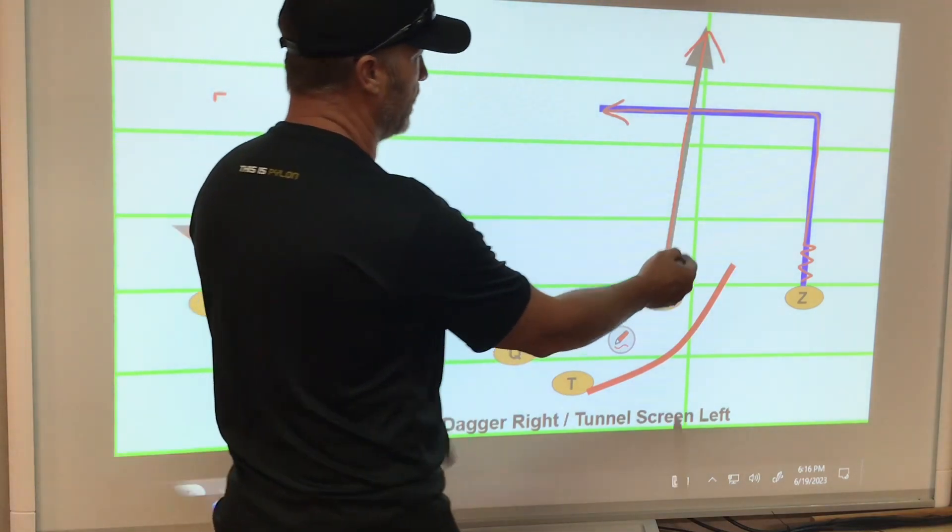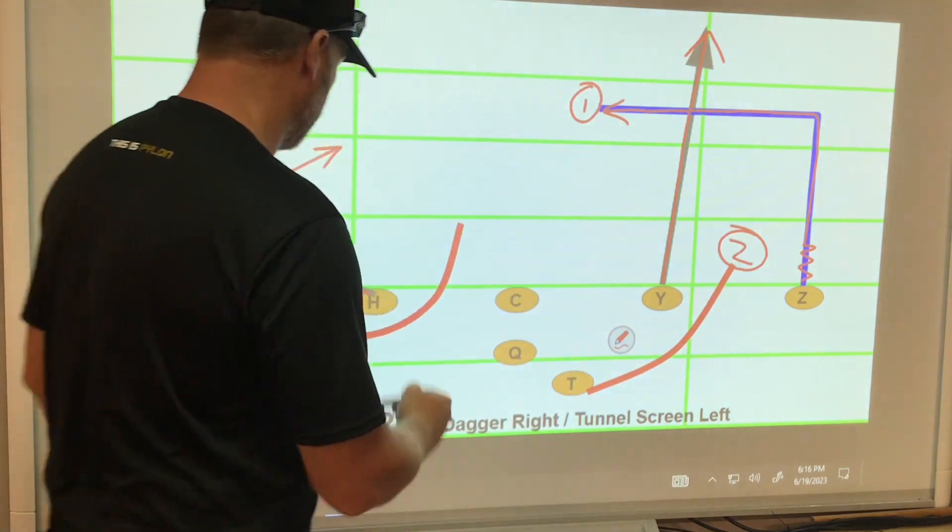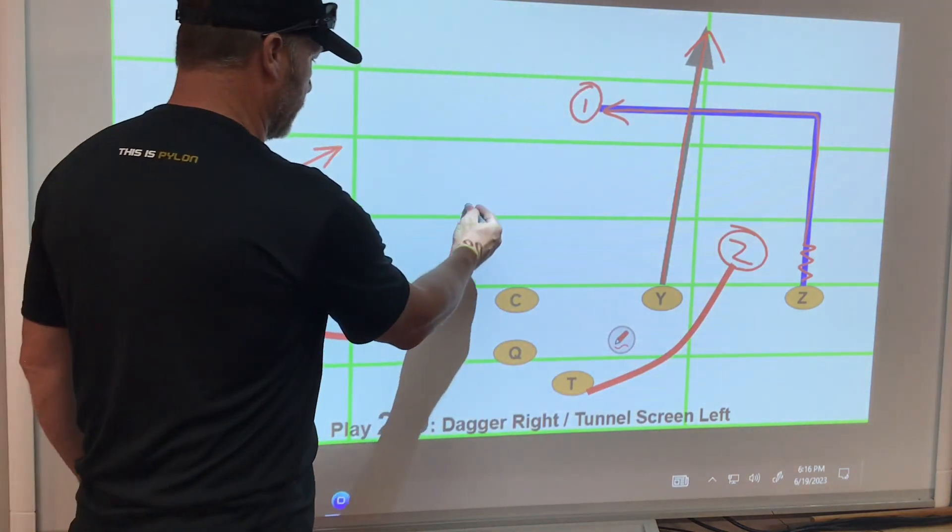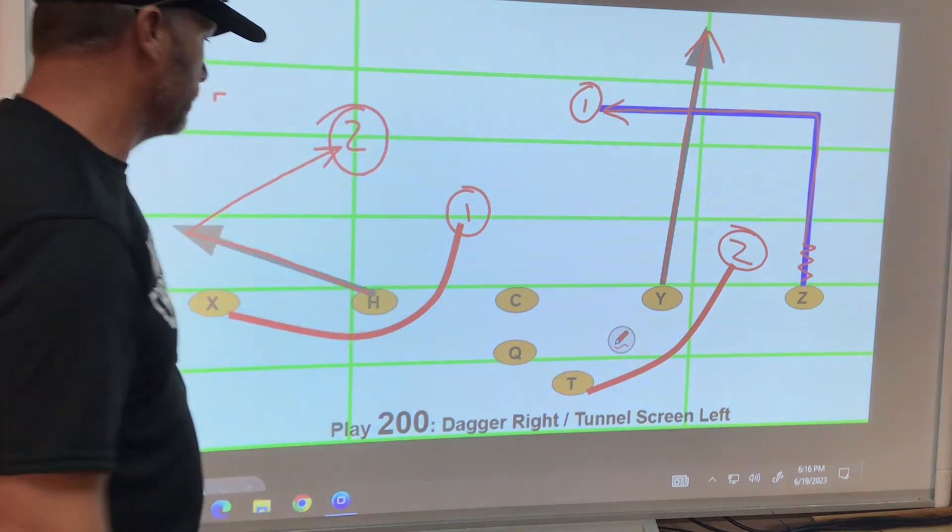Tailback will always go this way to replace in the dagger route. So if you pick this side, there's your first option. There's your second option. If you pick this side, we only need a few yards. There's your first option. There's your second option.